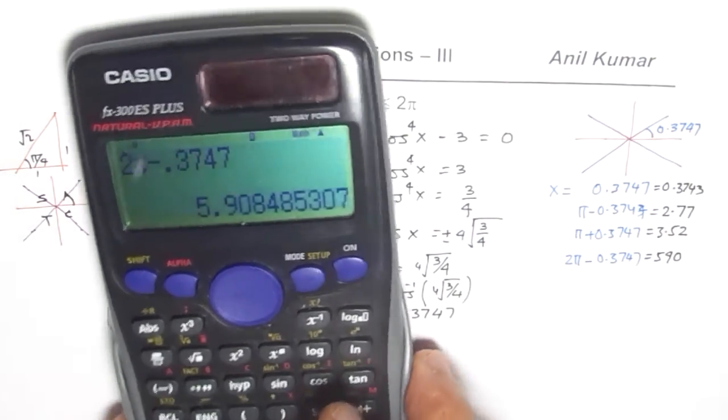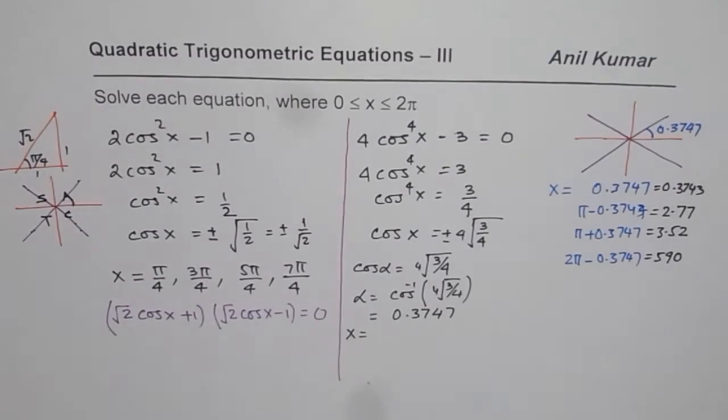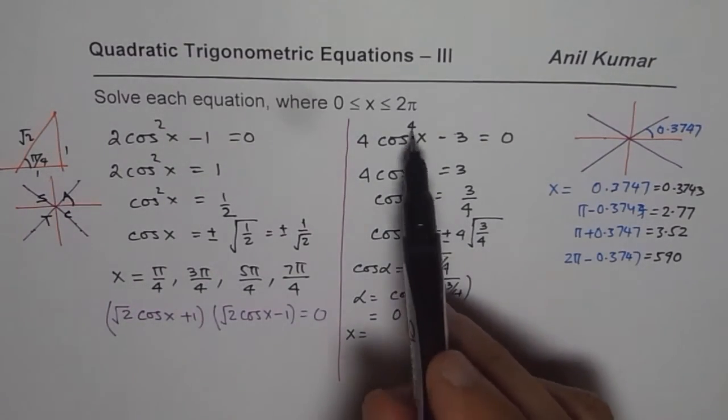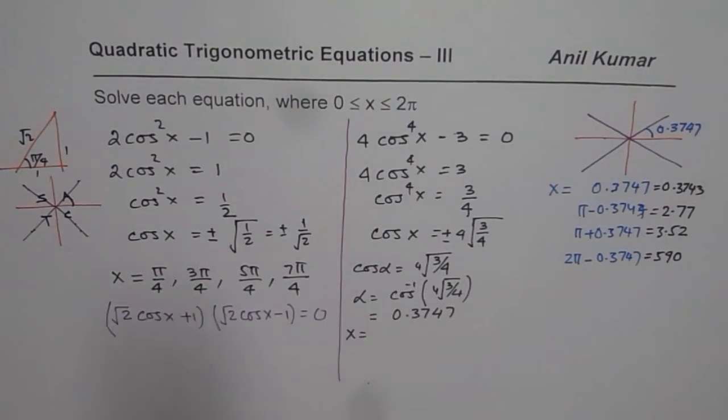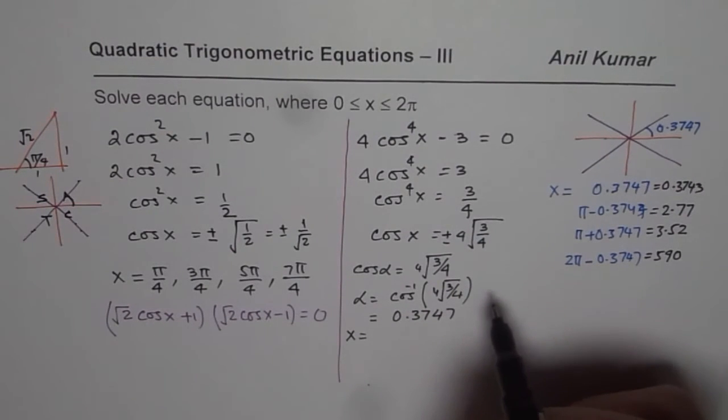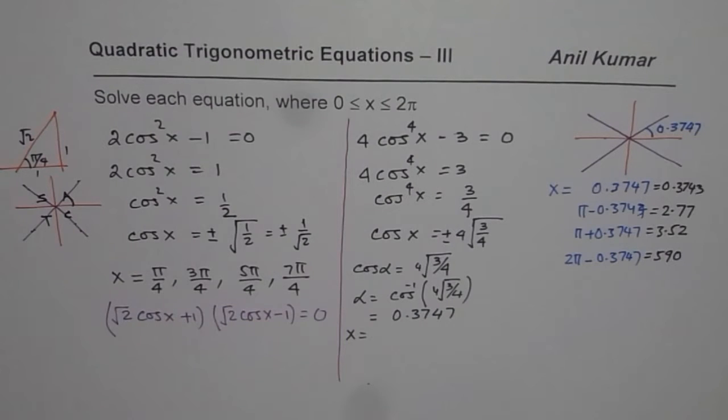So these are the 4 solutions for the given question. So that is how you should be solving such questions. Even if the higher powers are there, if it is even, then we have to consider both negative and positive. However, if it is cubic, then you know negative cube root will be negative and positive cube root will be positive. So that is what you need to consider when you find the solutions for such equations.